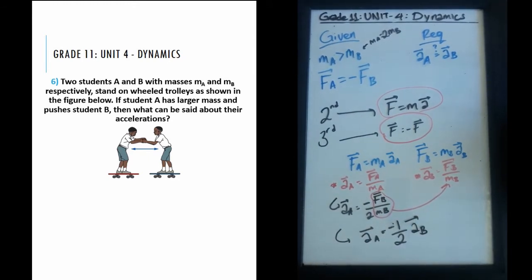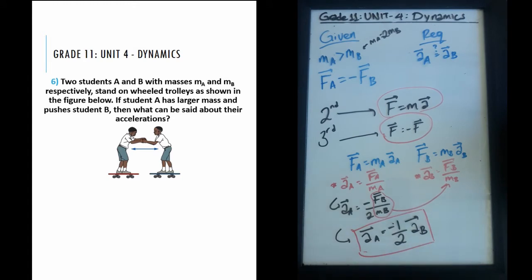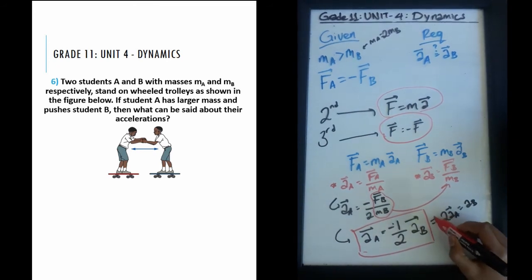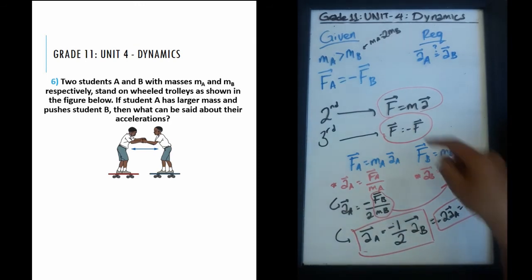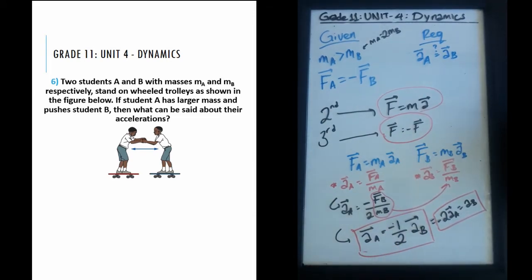This gives us acceleration A = −(1/2) × acceleration B. We have everything we need to define the relationship. We can also rearrange this as: −2 × acceleration A = acceleration B. The negative sign tells us the accelerations are in opposite directions, just as the forces were in opposite directions.